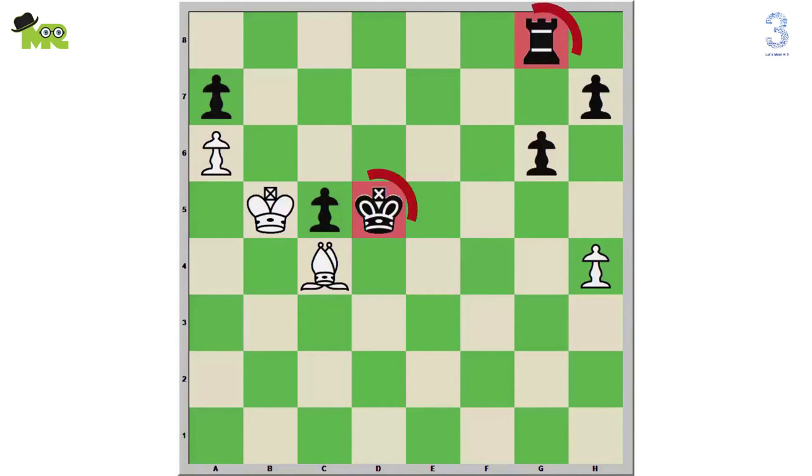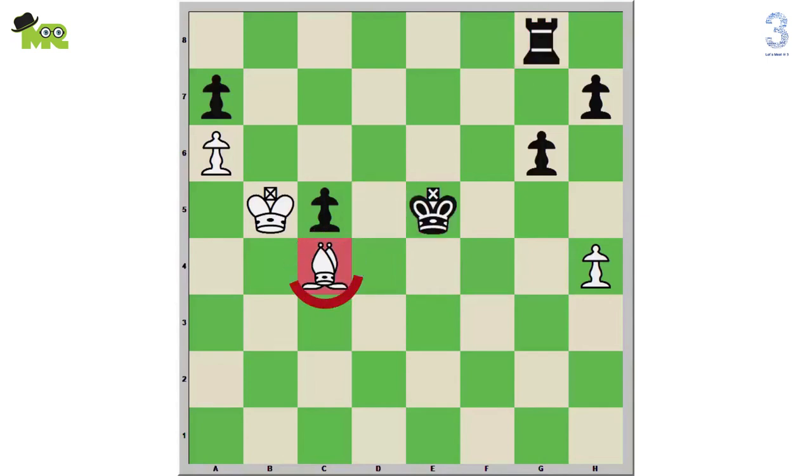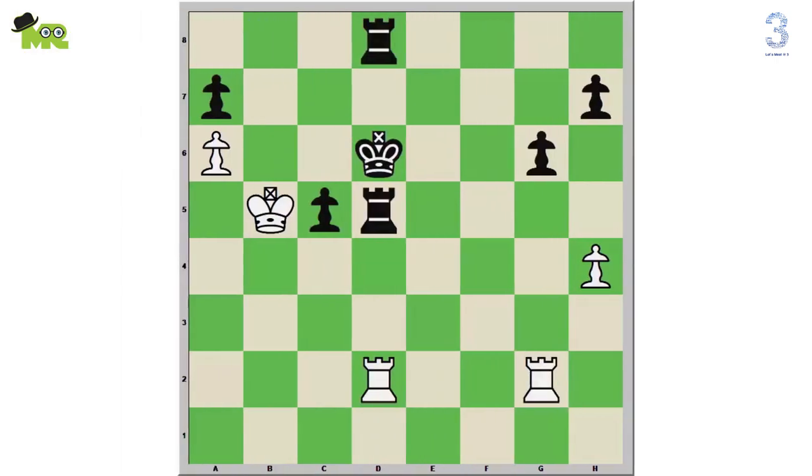Now the d5 black king is forced to move. Let's say the d5 king moves to d4. Now the white c4 bishop will capture the g8 black rook. So you see here, white gains a rook by making a skewer tactic. Let's see another position of skewer.